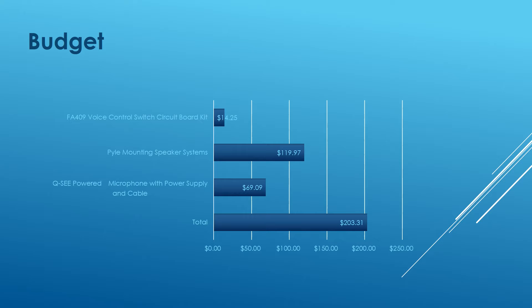The budget for this project is very reasonable. Here is the table of a complete mature product, which includes one circuit board, three speaker systems, and three microphones with power supply. For test purposes, there are no speakers, so it should be just under a hundred dollars, and all the wire can be acquired from the ECE laboratory.